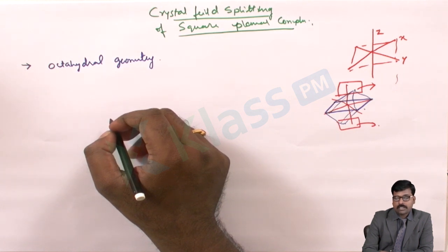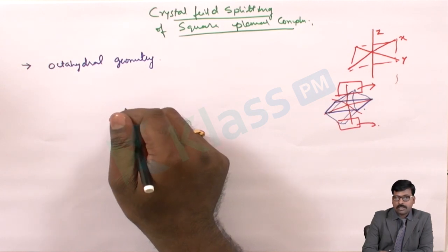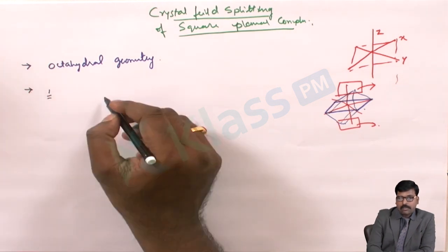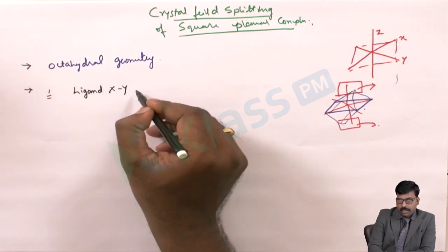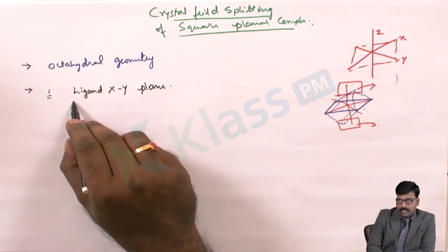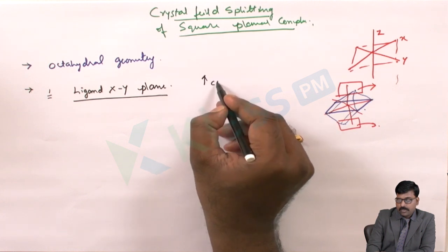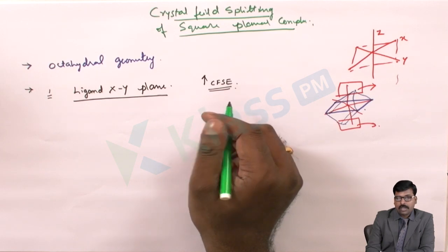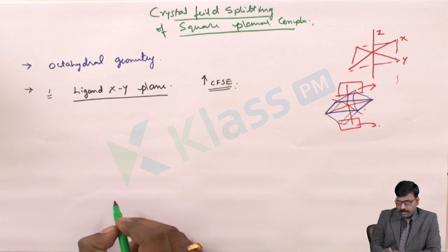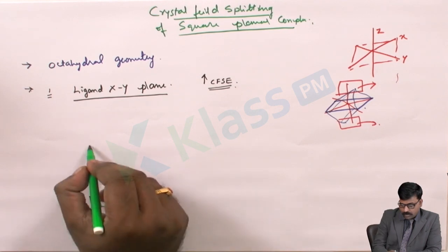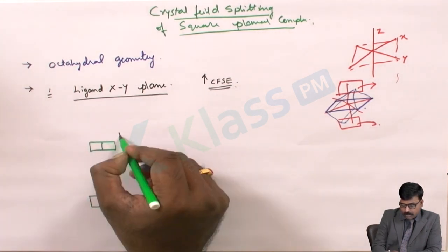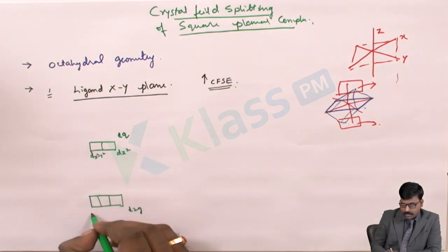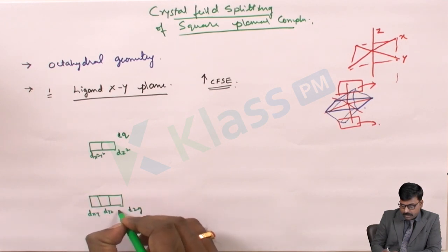The ligands approaching along the z-axis will not be considered. Here we should consider two major points. First, if the ligand is approaching from the xy plane, then the orbitals present in the xy plane will exert more crystal field stabilization energy, because they will experience more repulsive energy from the surrounding d orbitals. In octahedral splitting, the splitting is eg and t2g — that is dx²-y² and dz², then dxy, dyz, dxz.